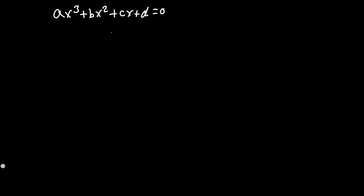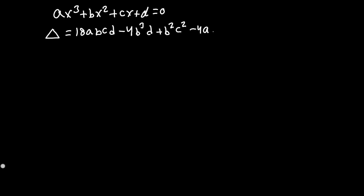The discriminant for this polynomial is quite lengthy, but it is: Δ = 18abcd - 4b³d + b²c² - 4ac³ - 27a²d².